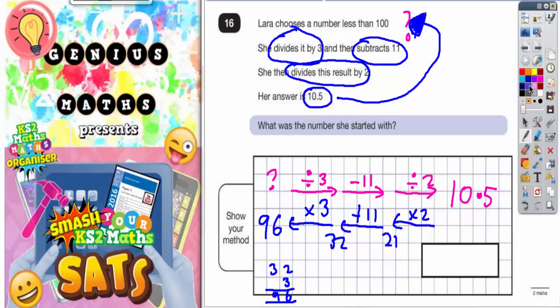Now we've got back to the beginning - 96 should be our answer. So we're writing 96.